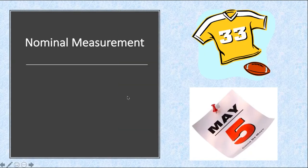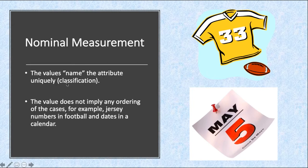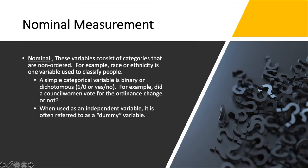Nominal measurement: the value names and uniquely classifies attributes, but the value does not imply any order. Examples include jersey numbers in football or days in a calendar. Nominal variables consist of non-ordered categories, for example race or ethnicity: one Malay, two Chinese, three Indian, and so on. A simple categorical variable is binary or dichotomous — yes or no, one or zero. When used as an independent variable, it is often referred to as a dummy variable.